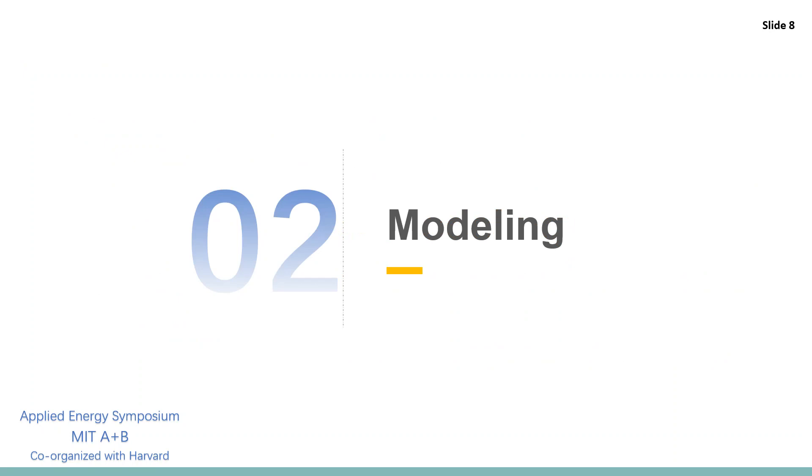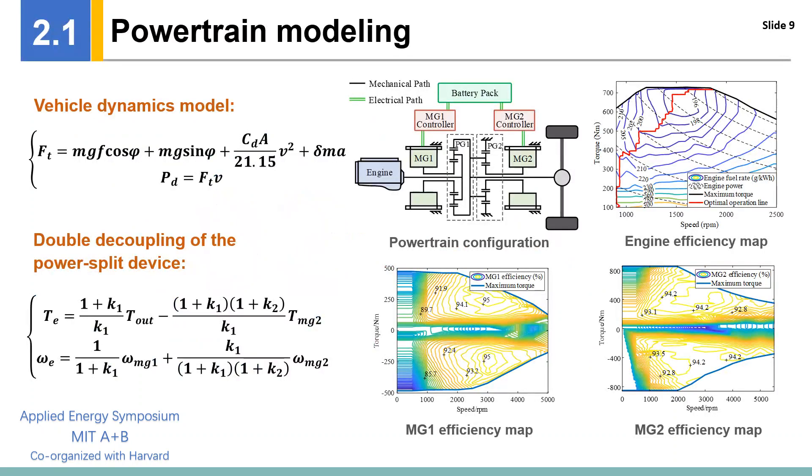Part two is the modeling. The power-split configuration of the urban hybrid electric bus is used in our research to control the engine to work in the high-efficiency area thanks to the power-split device. The powertrain components such as the engine, the generator, and the motor are modeled in the data-driven way. The efficiency maps of them are given here, through which the efficiency can be calculated in real-time.